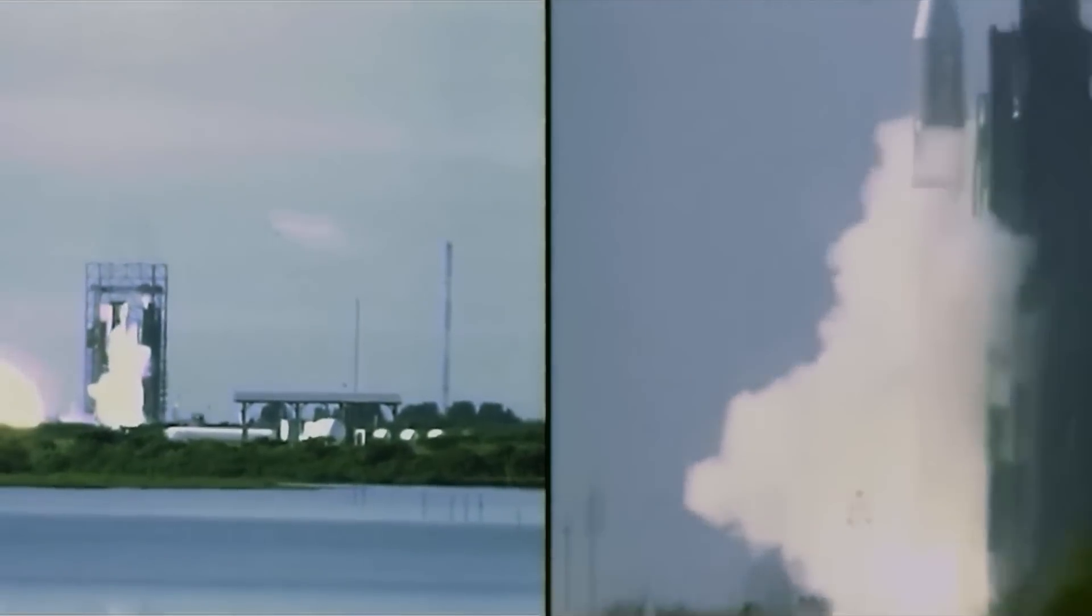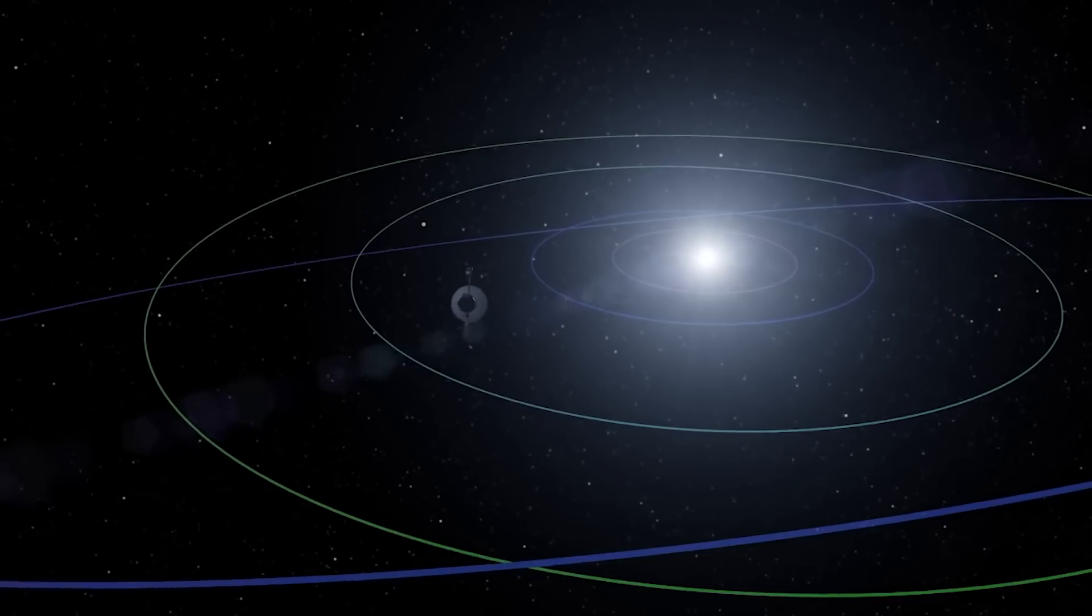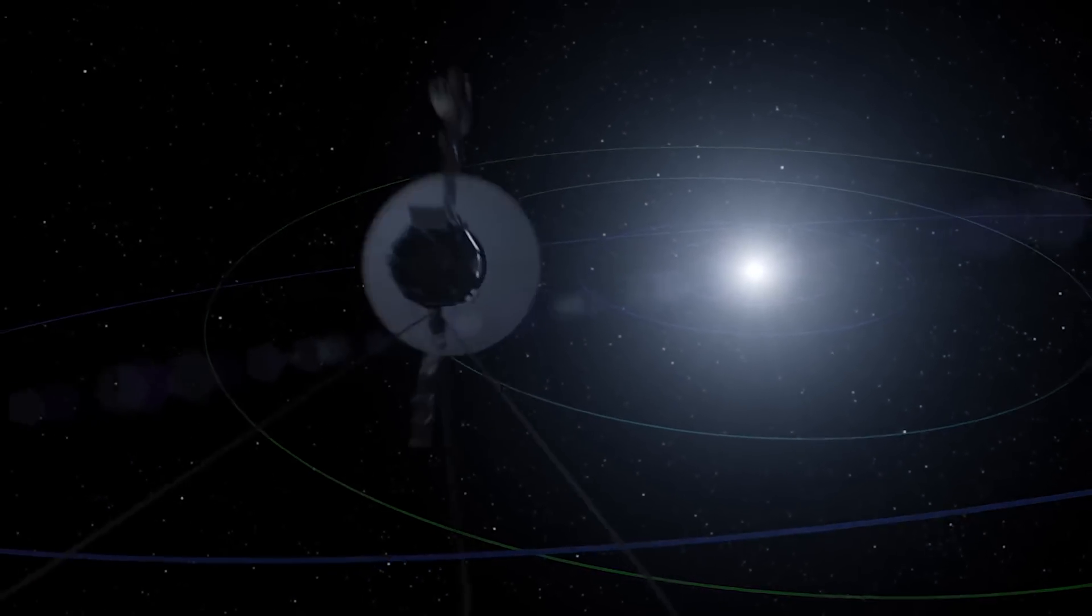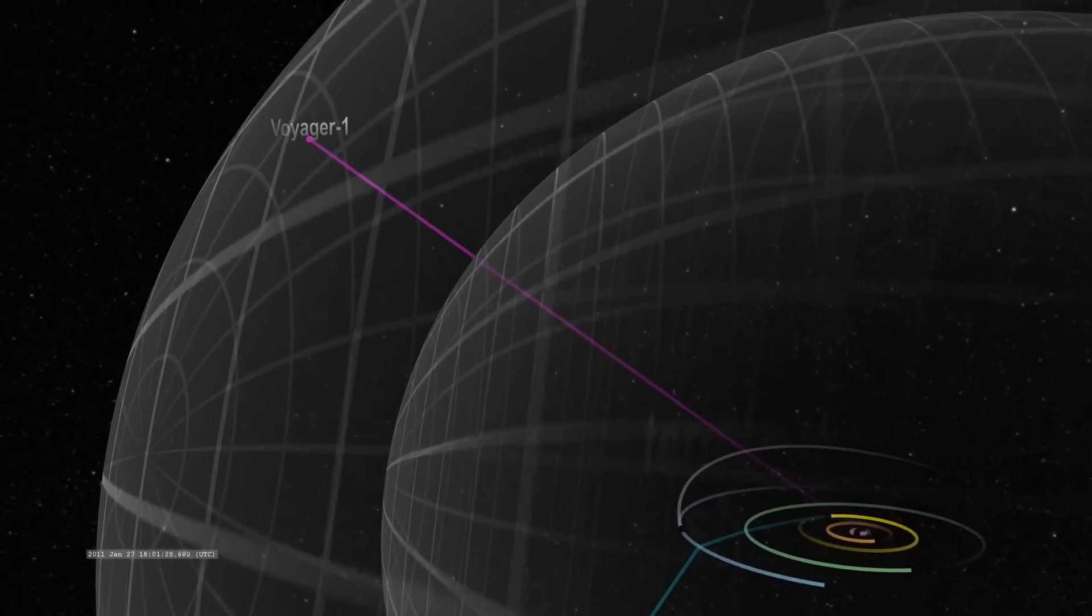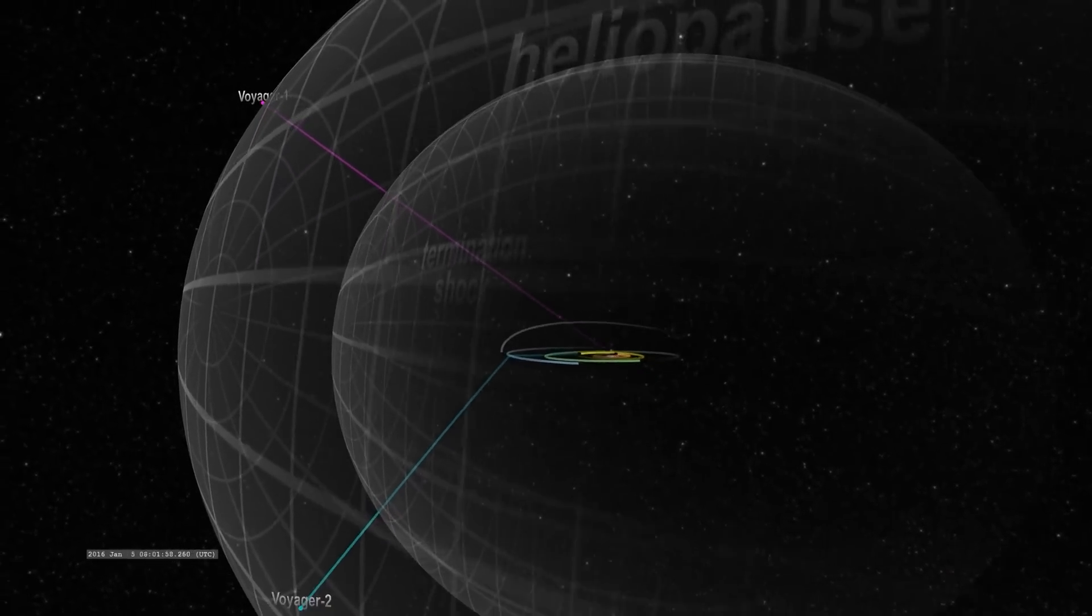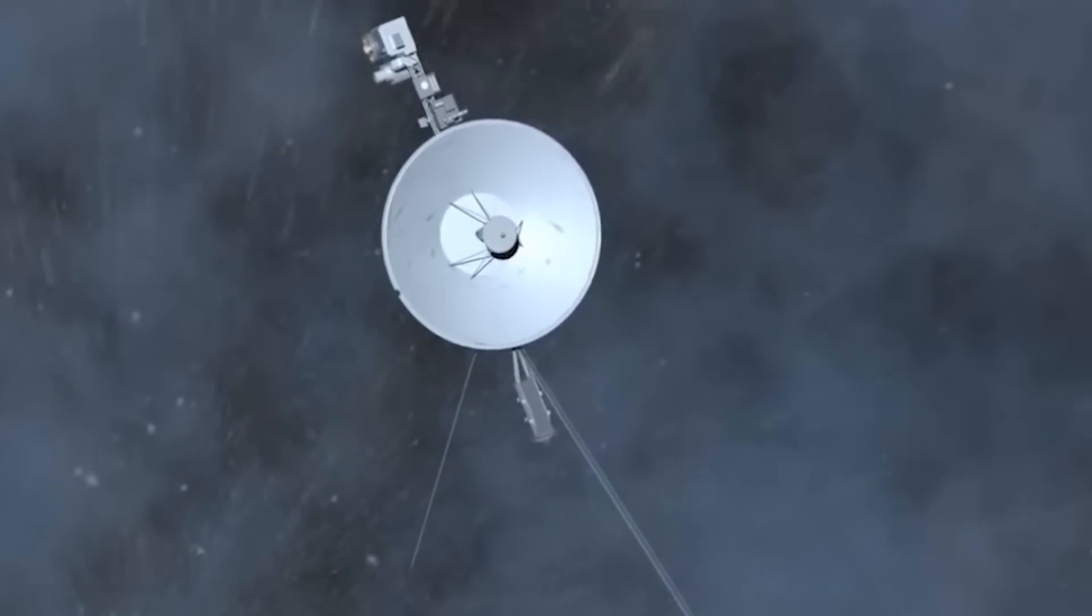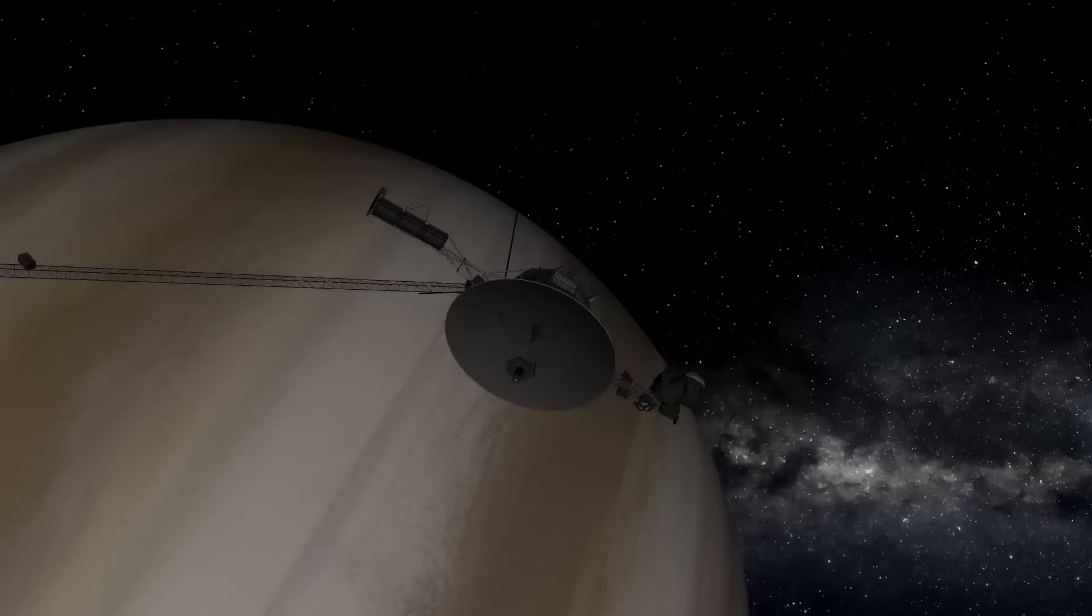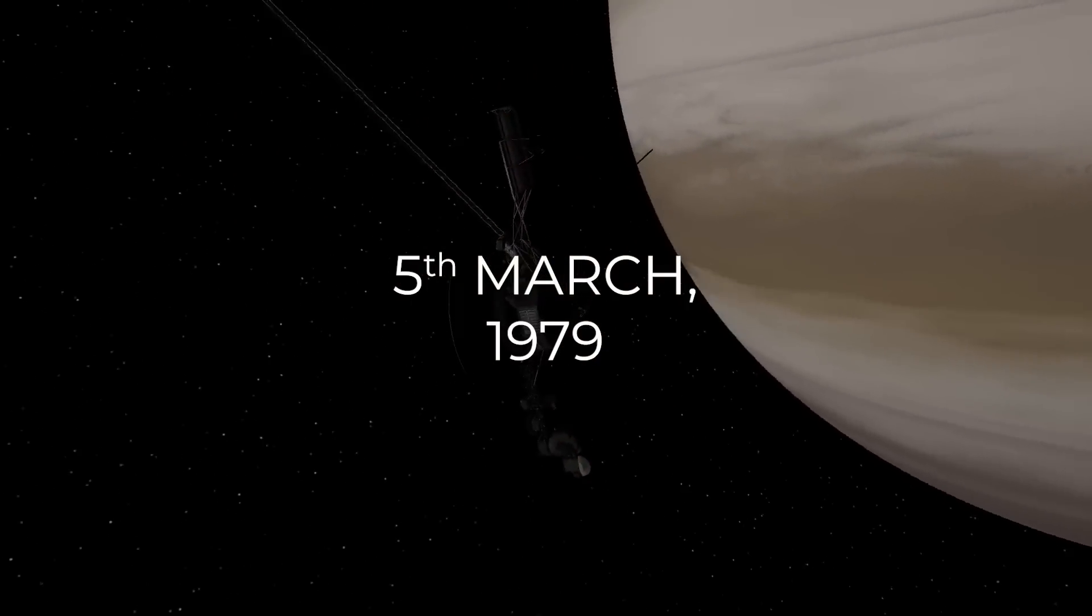Although Voyager 2 launched first on the 20th of August 1977, Voyager 1 reached the edge of the solar system first, despite lagging behind by two weeks. This is because Voyager 1 took a quicker route, but that came with a price. The route is not exactly the safest option. The space probe arrived at Jupiter just two years after the launch on the 5th of March 1979.